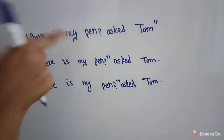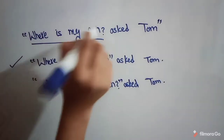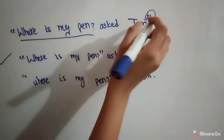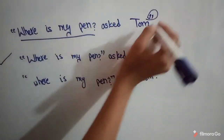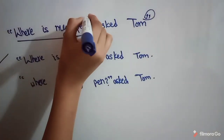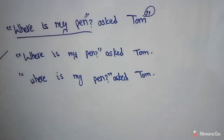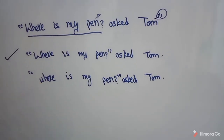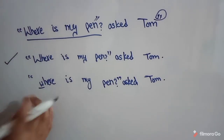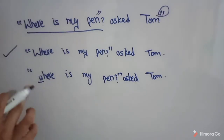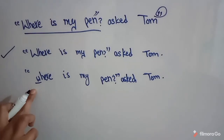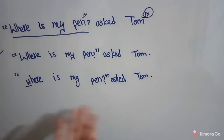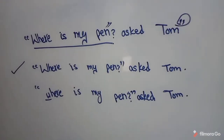The first one is incorrect because this is a question so the inverted commas should be placed here correctly. Also, the 'W' is small in the first option — 'W' must be capital. The third option is also incorrect for the same reason: the 'W' must be capital because the whole sentence structure requires it.